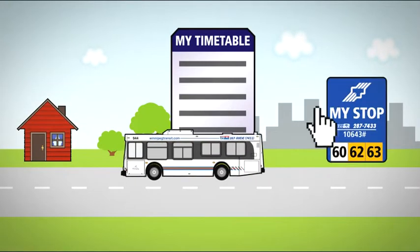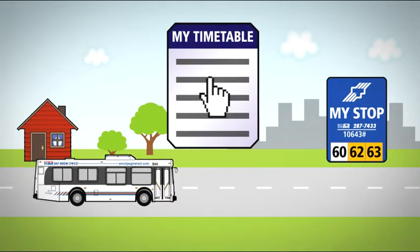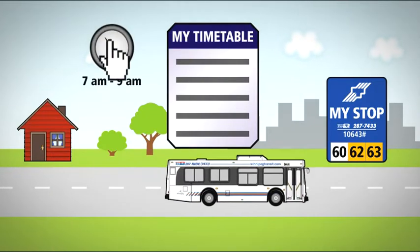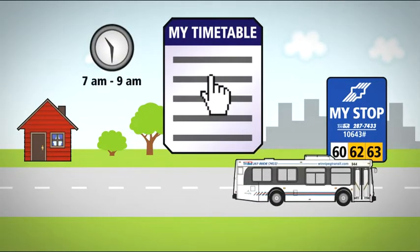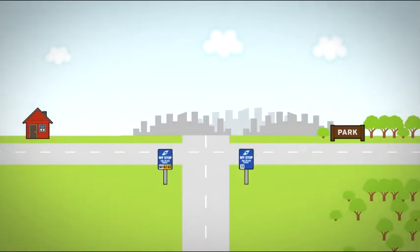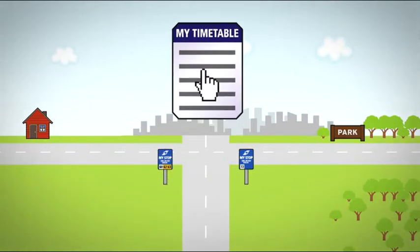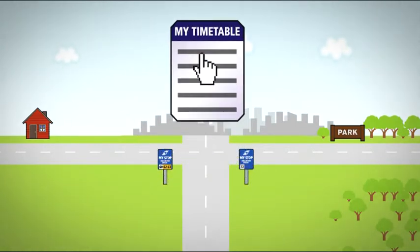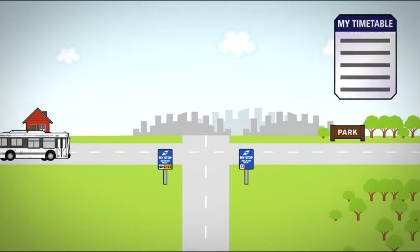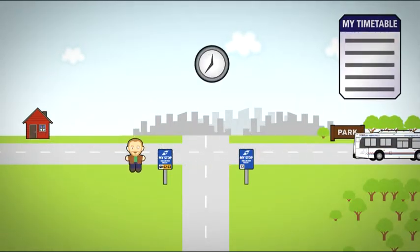If you want to get times for multiple routes at your favorite stop and are only interested in times between 7 and 9 in the morning, you can do that. Want to know what times your bus arrives at a transfer location down the road? No problem! Add that stop to your timetable, as well as the stop where you transfer to another route, and you have created a personalized schedule with only the information you want to see.